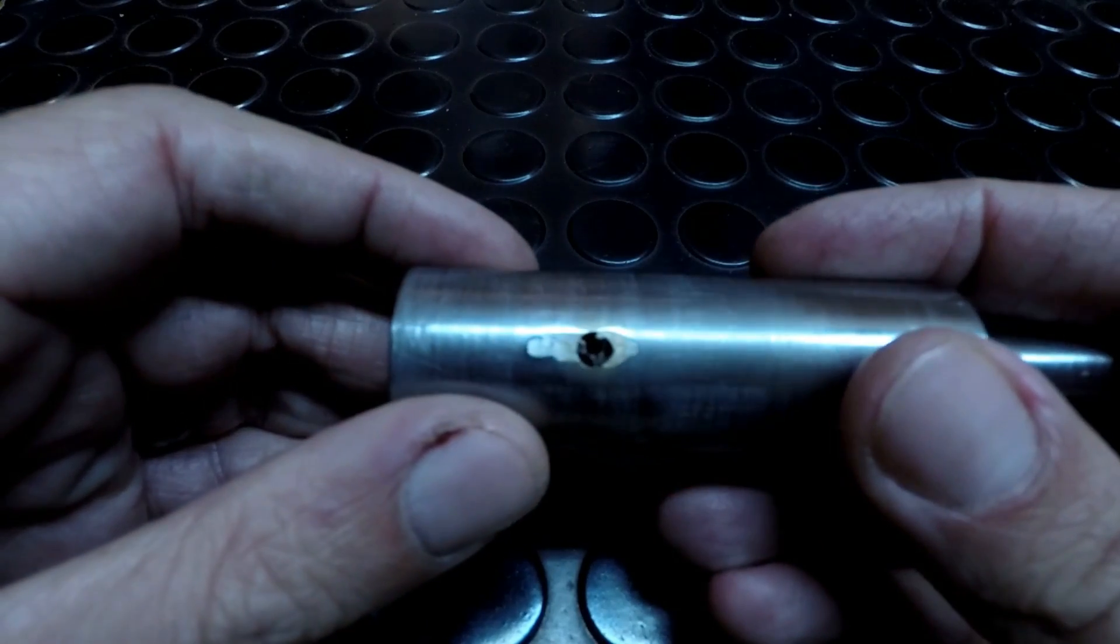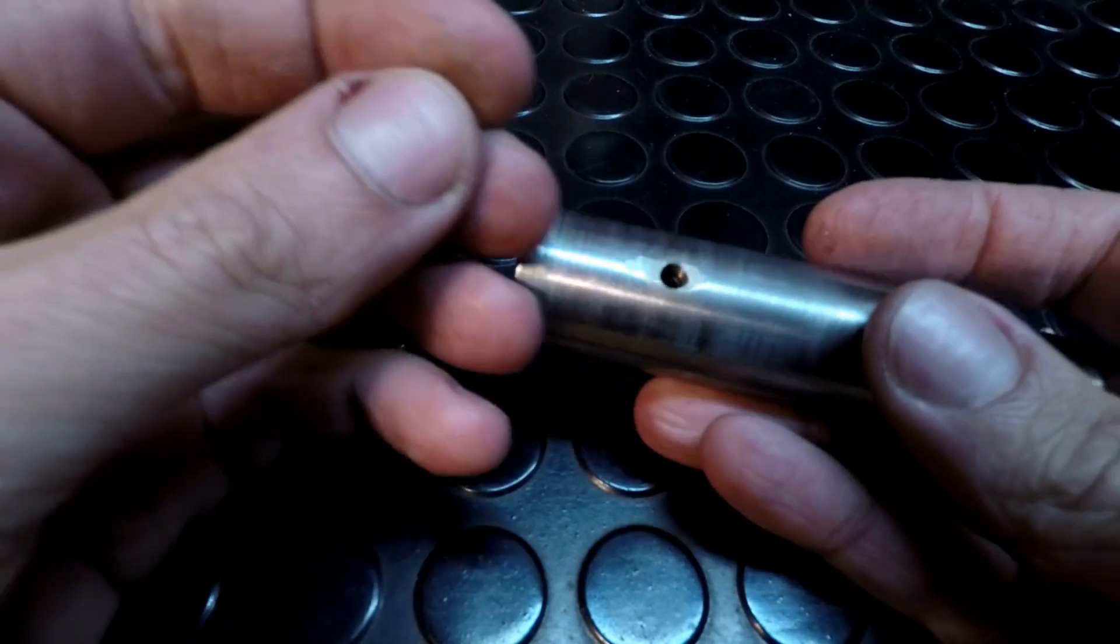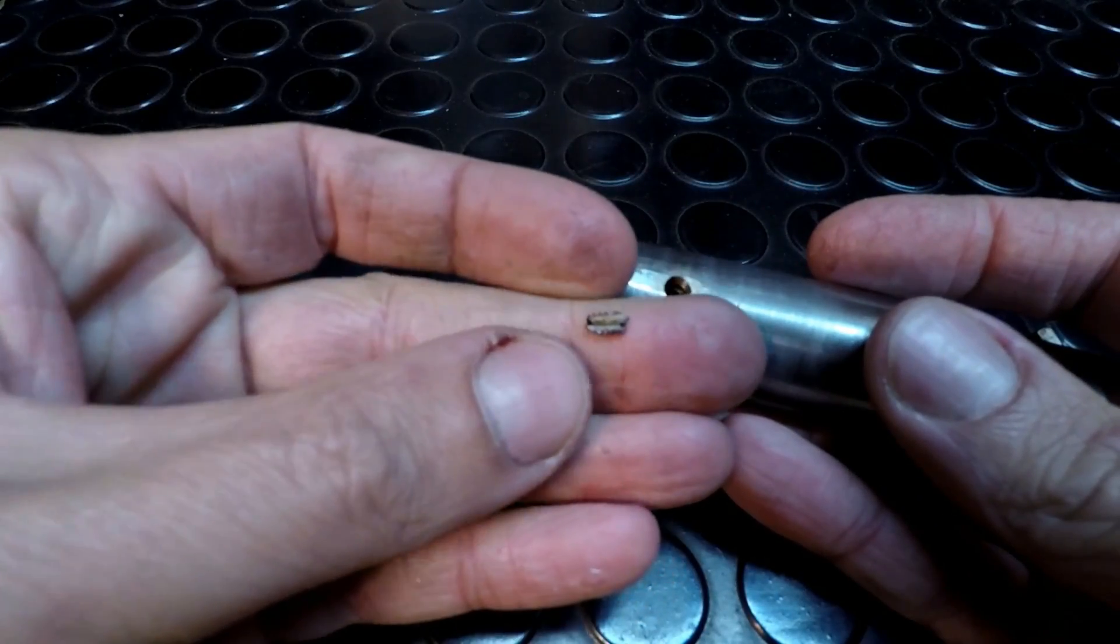The tap is unfortunately still stuck in there, but all we need to do is use a pin punch and a small hammer, give it a little bit of tap and there we go. Cracked apart.